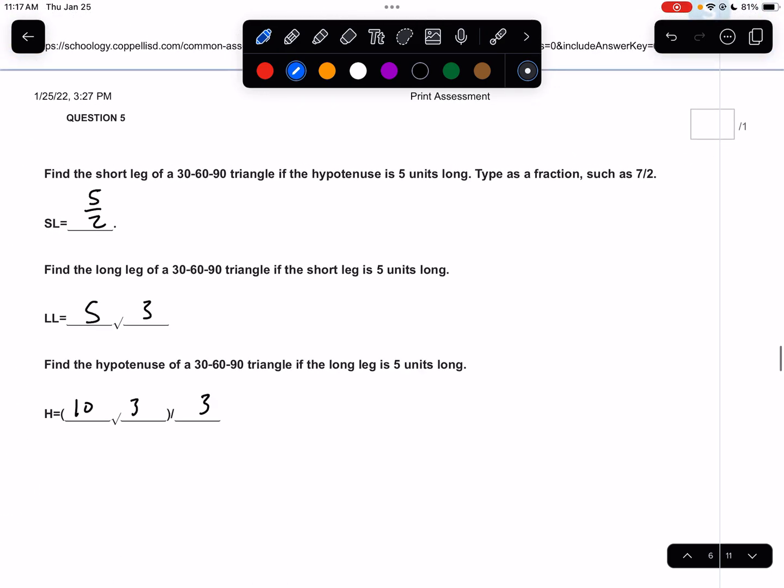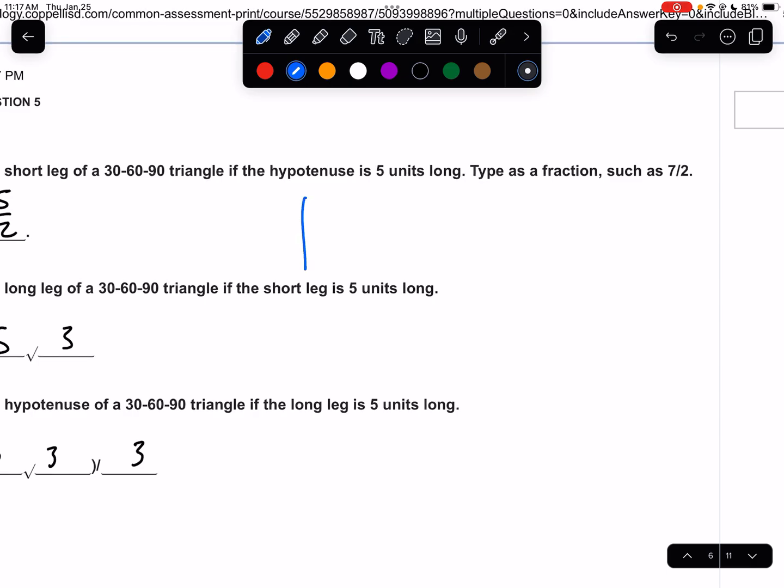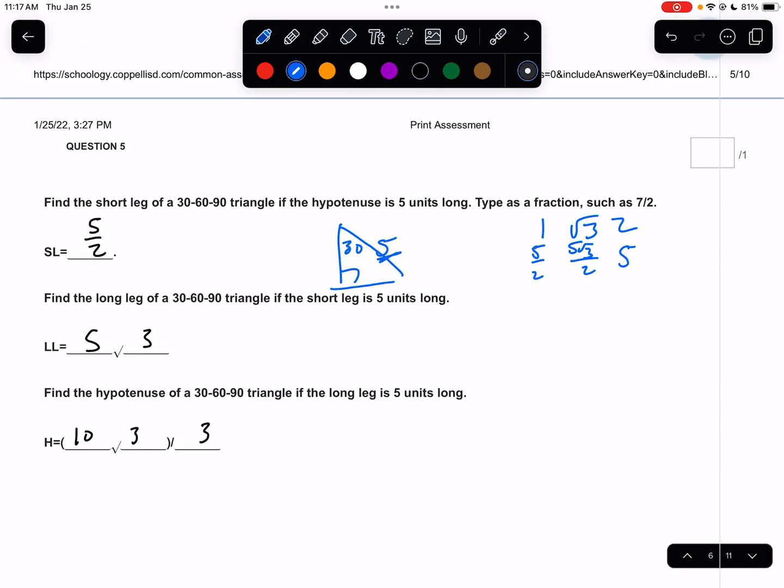Find the short leg of a 30-60-90 triangle if the hypotenuse is 5. So 30-60-90 triangle, hypotenuse of 5. This is 1, root 3, 2. So we have the 2, right? That's what we have. We divide by 2. That would be 5 halves. So the short leg would be 5 halves. Multiply by root 3, and you'd have 5 halves root 3 for the long leg. But they just wanted the short leg that would just be 5 divided by 2, or 5 halves. Type it as a fraction.